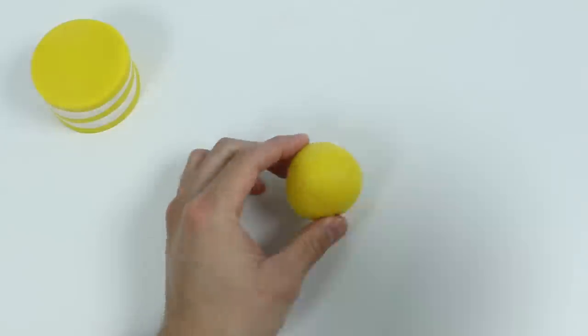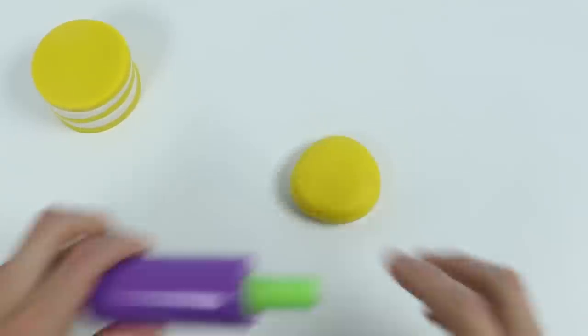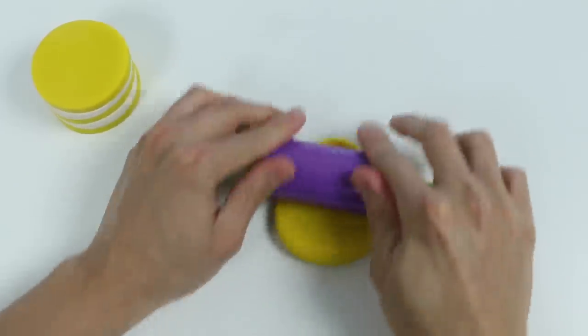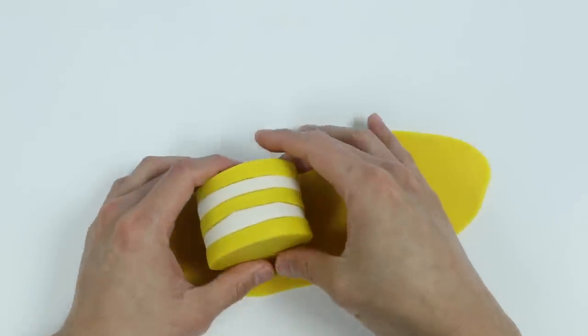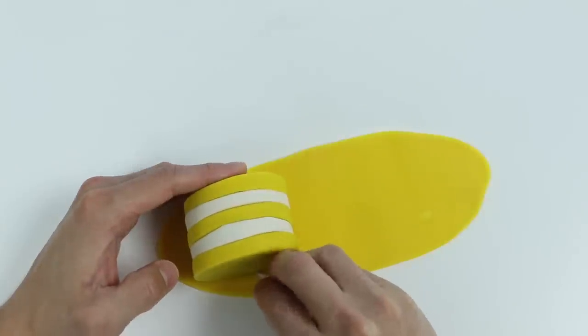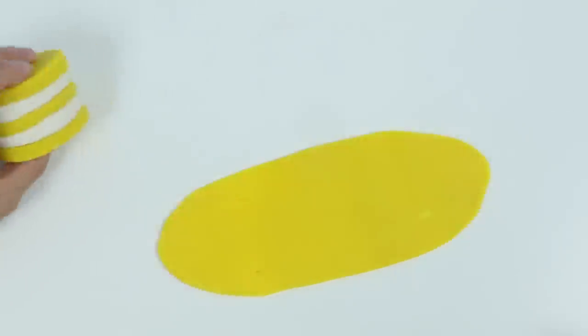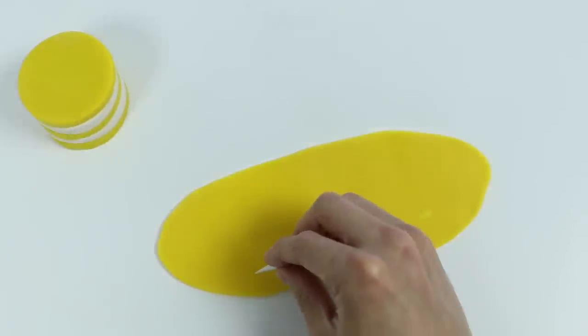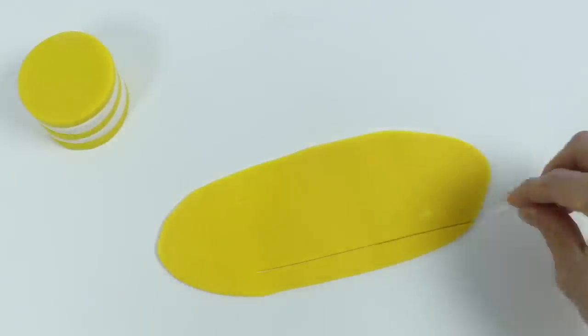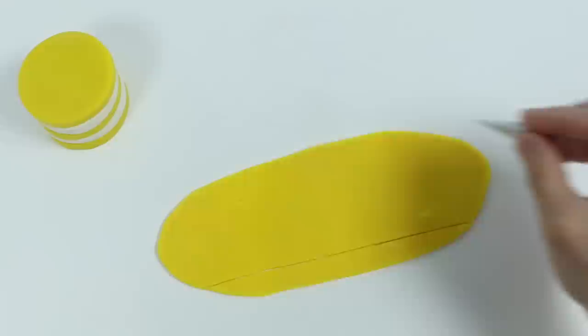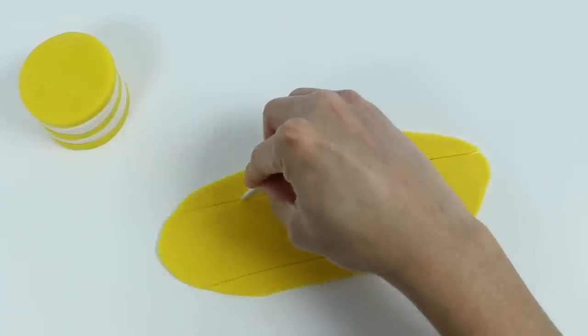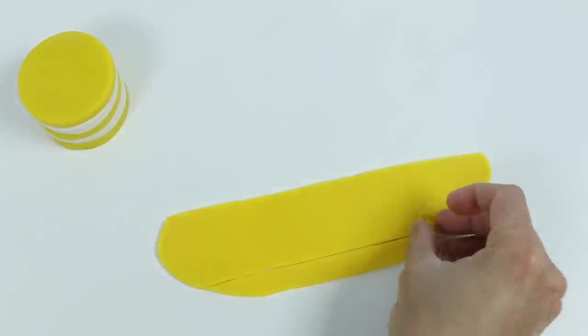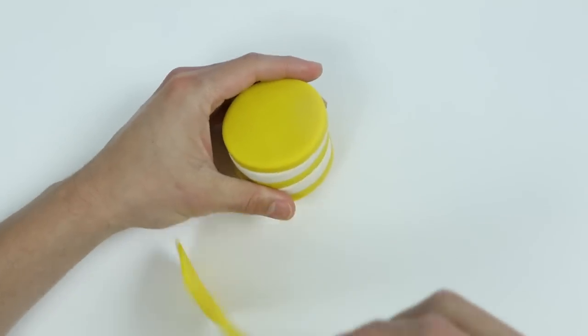But we can't finish it like that. Let's roll out some more yellow Play-Doh. Now let me quickly get some measurements. Use this tool to make a straight line. Let's make a straight line up top as well. Okay, now let's wrap this around the cake.